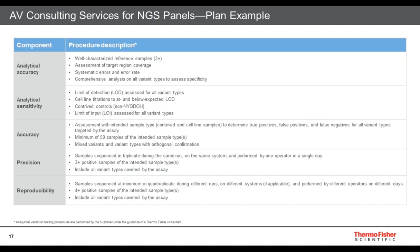The limited input study asks: if I take my recommended 10–20 nanogram total input and drop it down to one nanogram total input, hitting a few points in between, am I able to detect the same variant calls at lower inputs as at my normal recommended inputs?